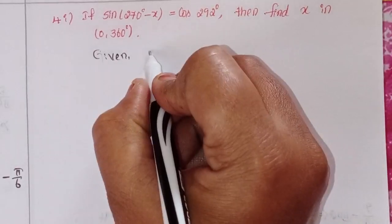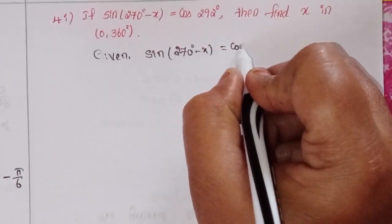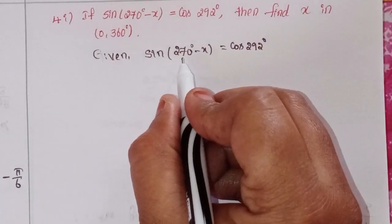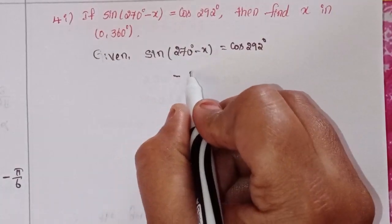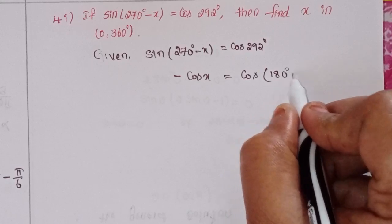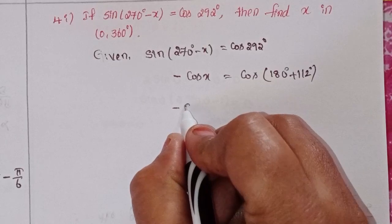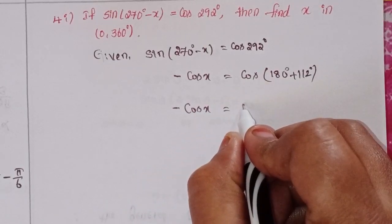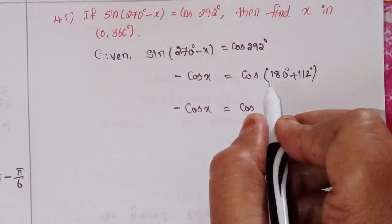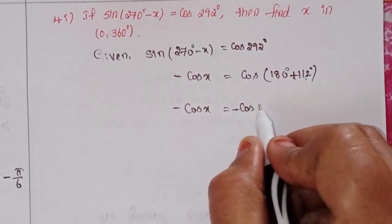First, write the given: sin(270° - x) = cos(292°). Now, sin(270° - θ) = -cos θ. And cos(292°) can be written as cos(180° + 112°), which equals -cos(112°) using the identity cos(180° + θ) = -cos θ.